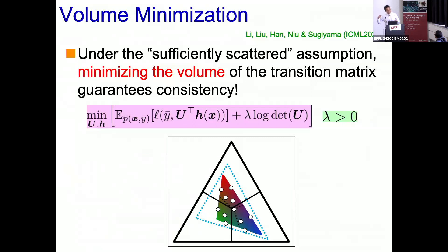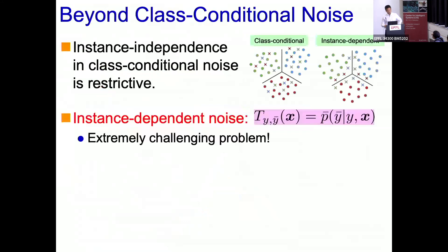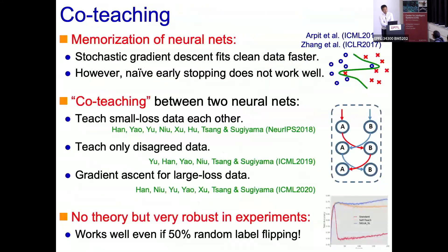Q: Is it possible to think of the co-teaching method as a kind of learning fast and slow — where one neural network is learning slow and the other is learning fast, and you balance between them? A: That's a very nice idea. To be honest, I'm not sure, but we can consider many variations of co-teaching — even preparing a third network. But maintaining diversity seems important, and maybe having one learn fast and one learn slow is part of what's happening.